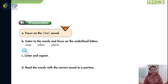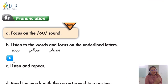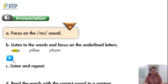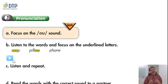We have three words here: 'soap,' 'pillow,' and 'fall.' Can you tell me what letters are underlined in the word 'soap'? They are O and A. What letters are underlined in the word 'pillow'? They are O and W. And what letters are underlined in the word 'fall'? Letter O.